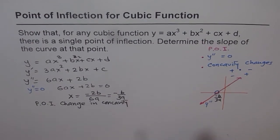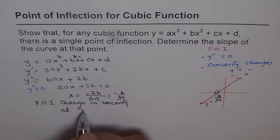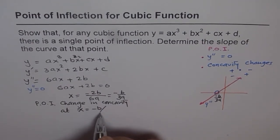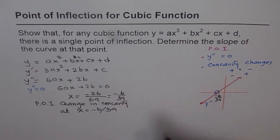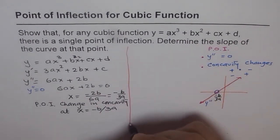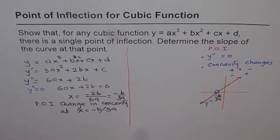This is point of inflection since we have change in concavity at x equals to minus b over 3a. So there is no doubt about it. Therefore, we can show even from a very general equation that this is true.